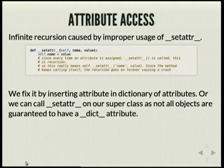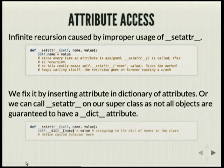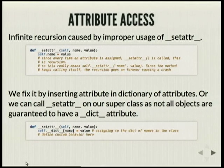It can cause infinite recursion — like self.name = value inside __setattr__ will again call __setattr__, so it's just going to keep recursing infinitely. We can negate that by not setting the attribute on the instance itself, but just changing a value of one of its attributes.